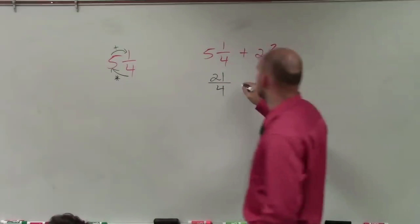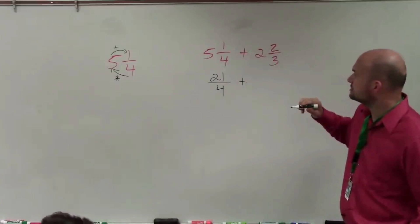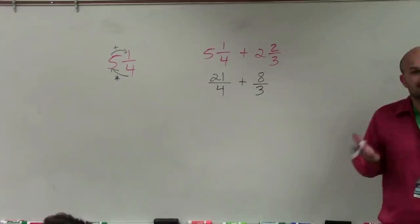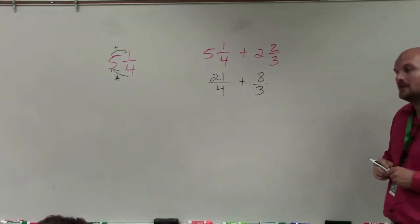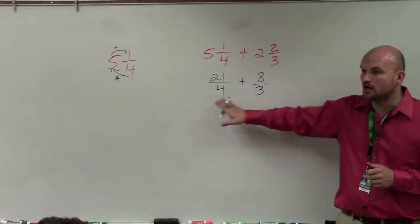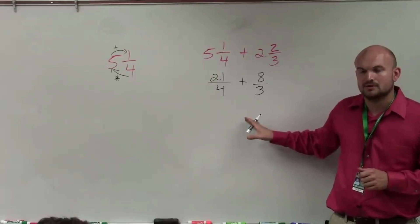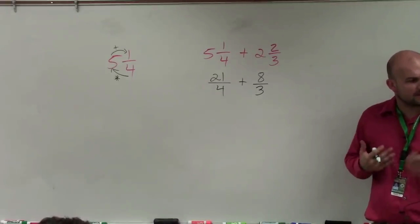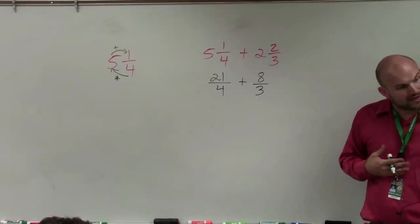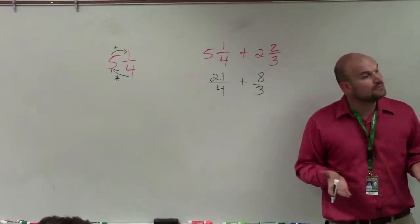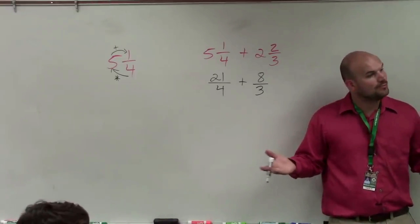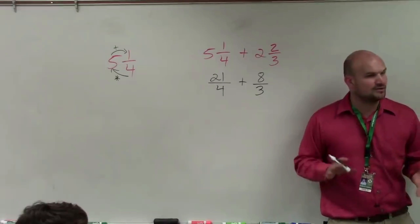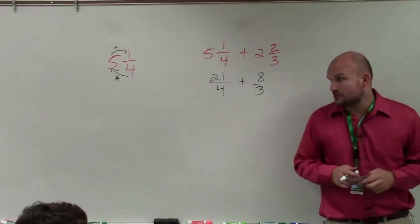Then I do the same thing on the other side: 21 over 4 plus 3 times 2, which is 6, plus 2 is 8 — so 8 thirds. Now I've written both as improper fractions: 21 over 4 plus 8 thirds. However, these are uncommon denominators, so we need to compute the least common denominator. One easy way to do that is to multiply the denominators: 4 times 3 gives you 12. We know 12 is divisible by both 4 and 3. Note that multiplying denominators isn't always the fastest method, but it works here.